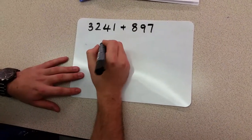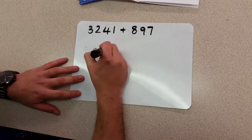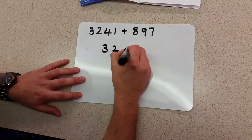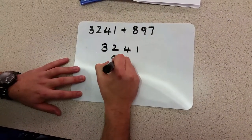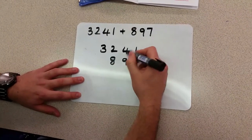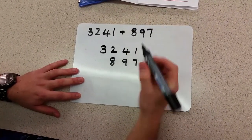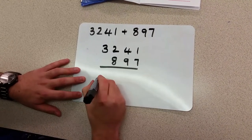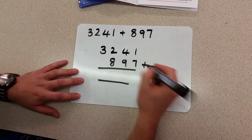We're going to use the column method, which relies on us writing these numbers to match up their place value. So the units are matched up, the tens are matched up, and the hundreds are matched up. I'm just going to draw some lines for my answer. I've got a plus sign to remind myself that we're adding.